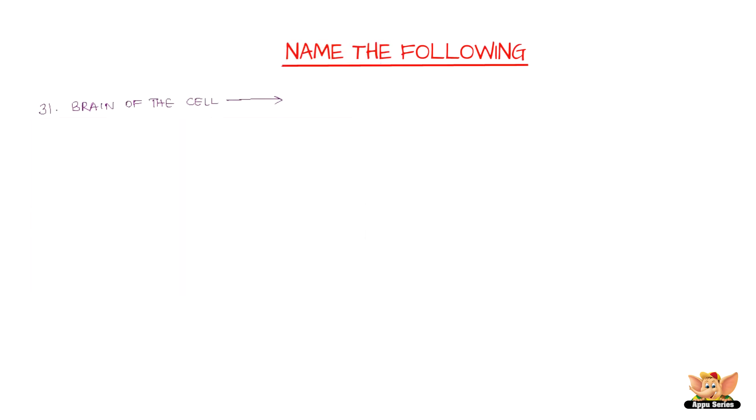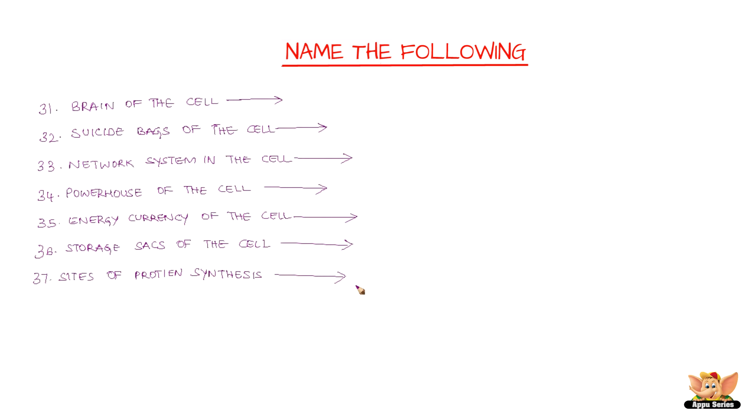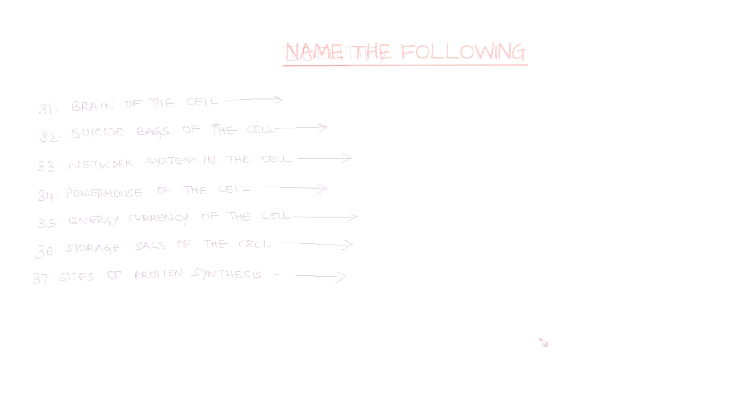Name the following: Brain of the cell. Suicide bag of the cell. Network system in the cell. Powerhouse of the cell. Energy currency of the cell. Storage sacs of the cell. Sites of protein synthesis.